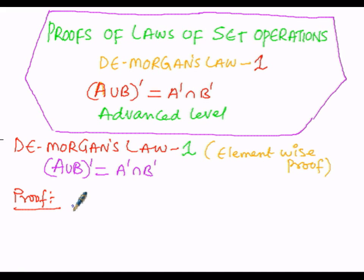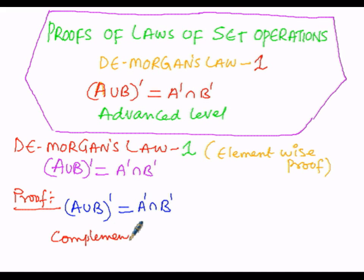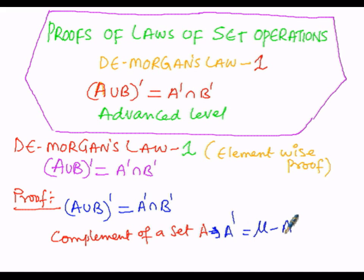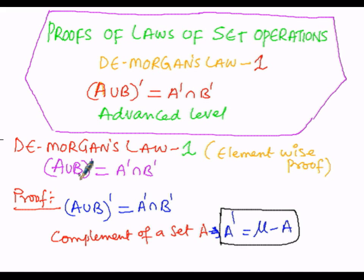Before proving (A∪B)' = A' ∩ B', let us first recall the formula for the complement of a set. The complement of set A, denoted A dash, is given by the formula μ minus A — that is, the universal set minus the given set A. So A dash equals μ minus A. Similarly, we will need (A∪B) whole dash.